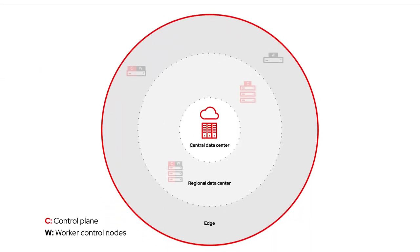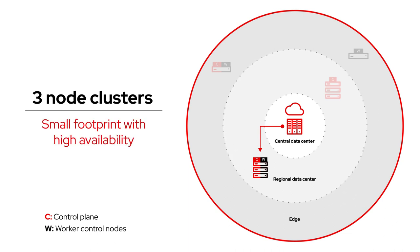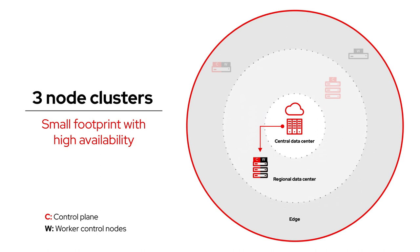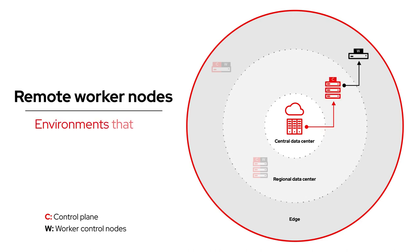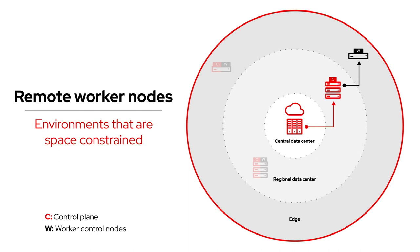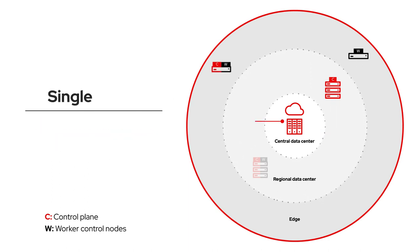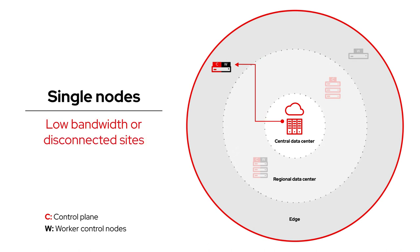They include three-node clusters with built-in high availability in a smaller OpenShift footprint for sites that require continuous operations where connectivity to remote sites can be unreliable; remote worker nodes that separate Kubernetes cluster management from worker nodes so that the smaller worker nodes can be placed in space-constrained environments; and single nodes that combine the cluster management and worker node into one server, ideal for low bandwidth, intermittent, disconnected, or space-constrained locations.